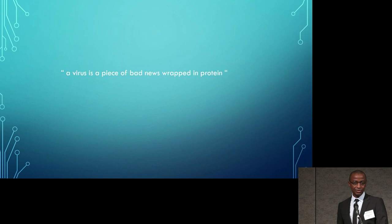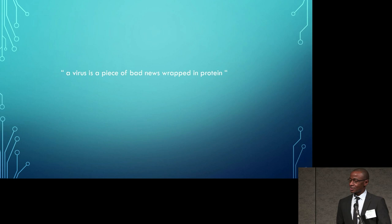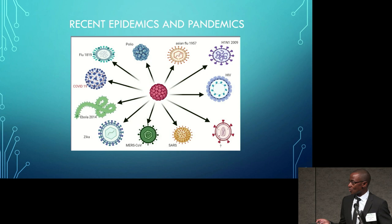For viruses to be successful, they need to balance their replication against limiting damaging host response in order to self-propagate. These words have never been more true than now when we think about recent epidemics and pandemics. In the past century, most pandemics and epidemics are primarily viral — save for the Black Death and Yersinia pestis — and most recently with SARS-CoV.